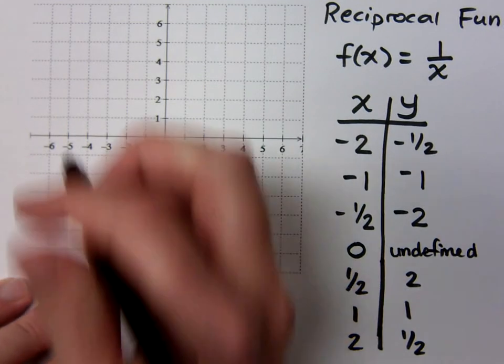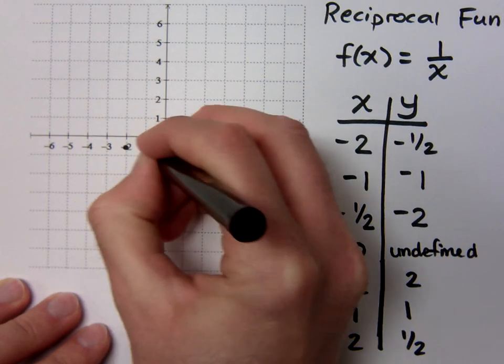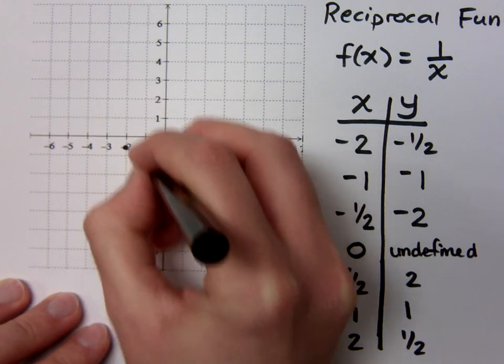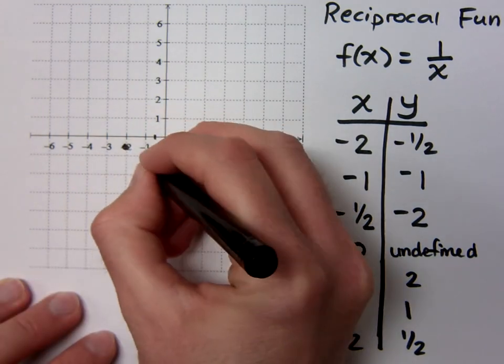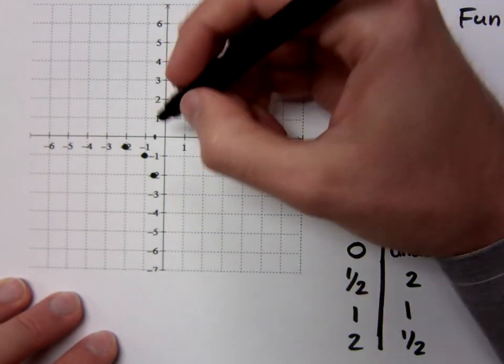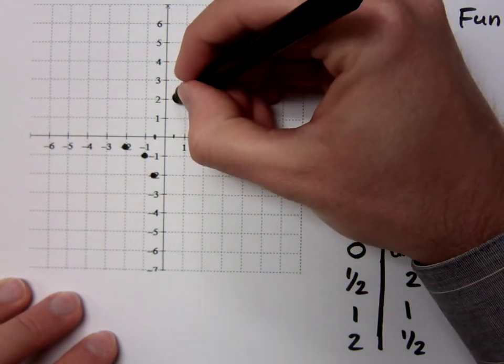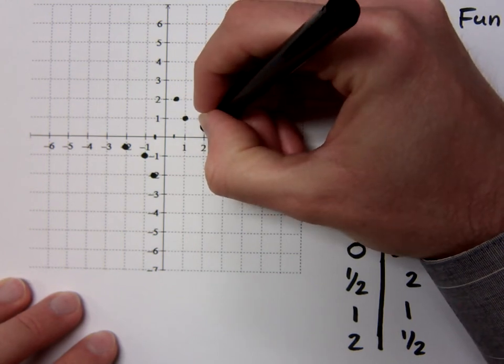So we have negative 2 and negative 1 half is right here. Negative 1, negative 1. Here's 1 half. And you're down here at 2. Okay, so these are your key points. On the other side, you have 1 half, 2, 1, 1, 2, and 1 half.